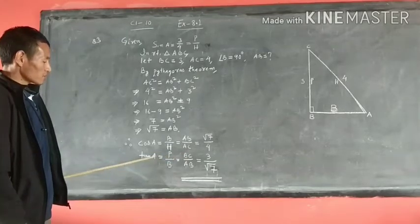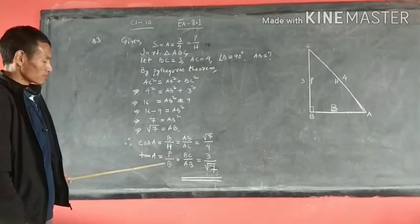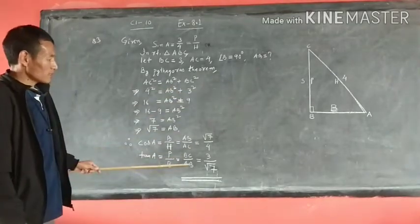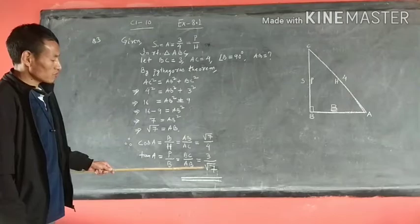Tan A equals perpendicular over base. Perpendicular BC is 3, and base AB is root 7. Therefore tan A equals 3 over root 7.